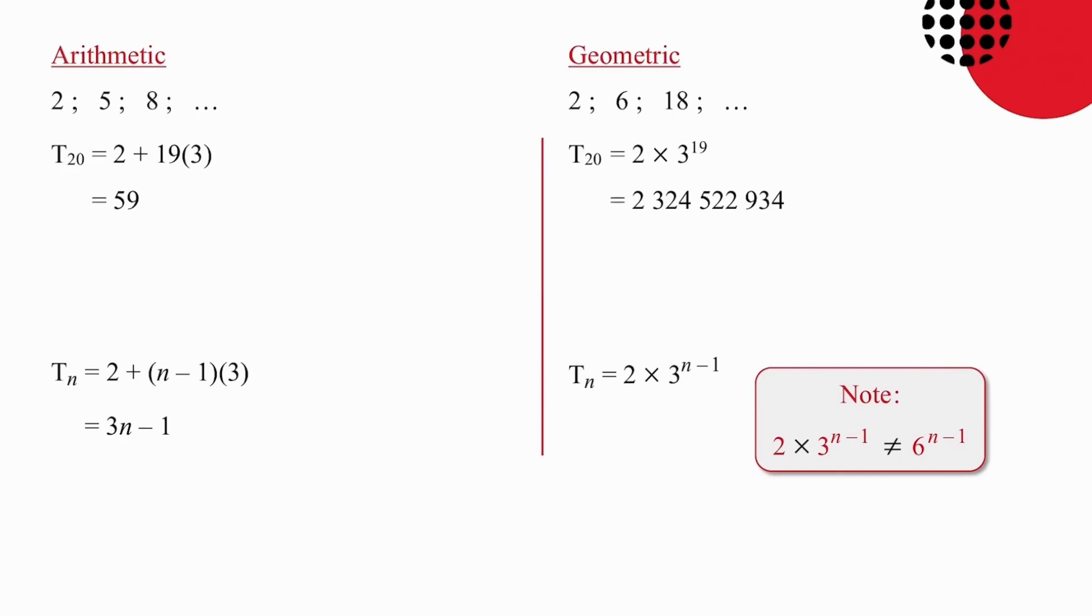Working now with the 20th term of each sequence, we can see that for the 20th term, we are working with 19 common differences for the arithmetic sequence. For the geometric sequence for the 20th term, we are working with 19 ratios. So going back to the arithmetic sequence, T20 is 2, which is the first term value, plus 19 times the common difference to give us 59.